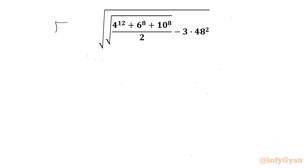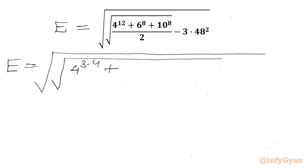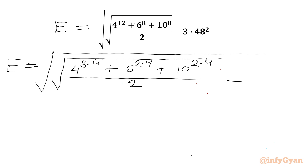Let's get started by considering this expression equal to E. We can write E equal to the square root of 4 to the power 12, then 4 to the power (3×4) plus 6 to the power 8, then 6 to the power (2×4) plus 10 to the power 8, then 10 to the power (2×4) over 2, minus 3 times 48 — which we write as 8 times 6, whole square.